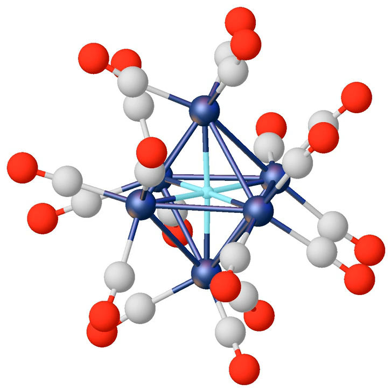Ionic or saline hydrides are composed of hydride bound to an electropositive metal, generally an alkali metal or alkaline earth metal. The divalent lanthanides such as europium and ytterbium form compounds similar to those of heavier alkali metals. In these materials the hydride is viewed as a pseudohalide. Saline hydrides are insoluble in conventional solvents, reflecting their non-molecular structures. Ionic hydrides are used as bases and, occasionally, as reducing reagents in organic synthesis.